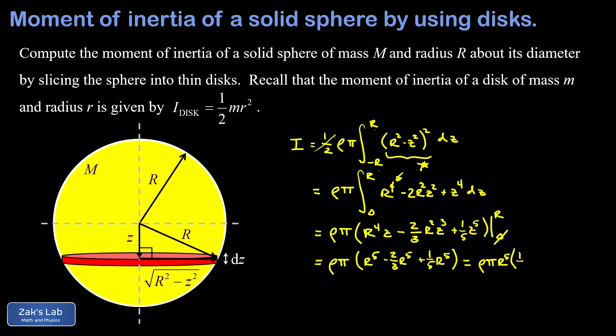And then I have one minus two thirds plus one fifth. Well one minus two thirds is one third. So I'm going to take care of that right now. And I have one third plus one fifth. One third is five fifteenths. One fifth is three fifteenths. So I end up with eight fifteenths rho pi r to the fifth.